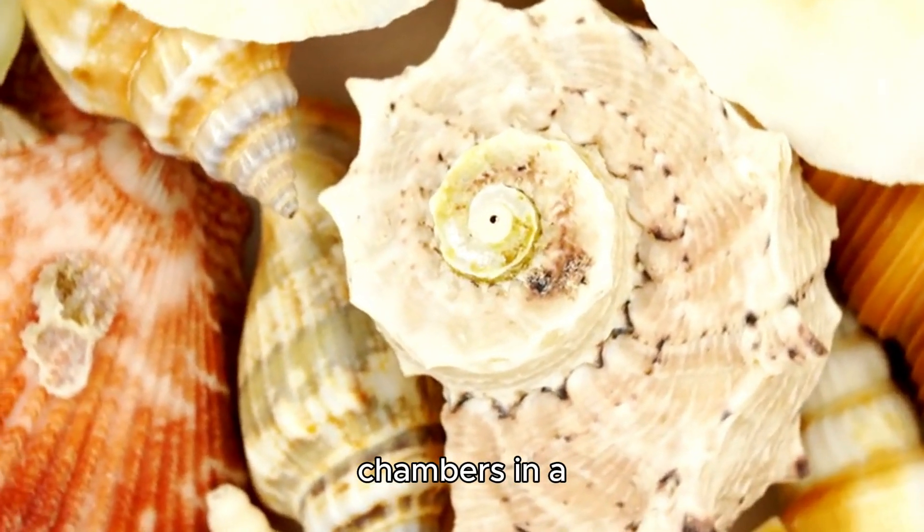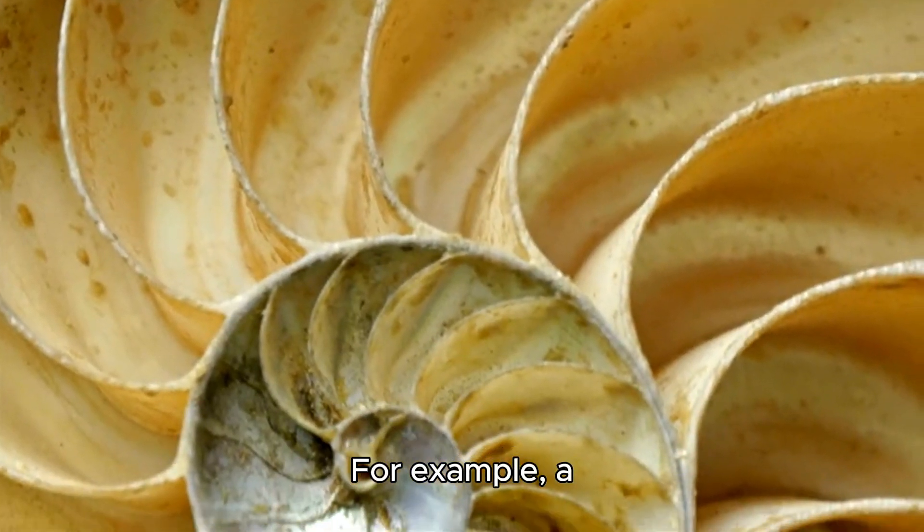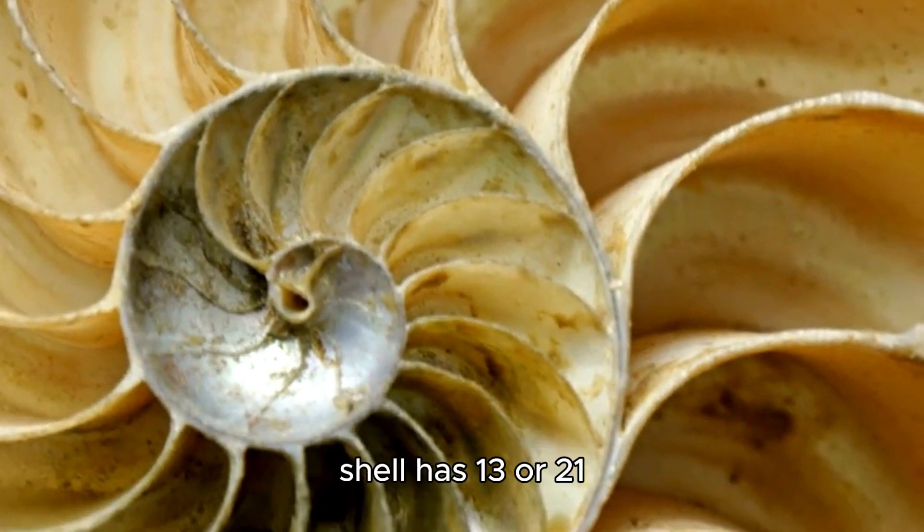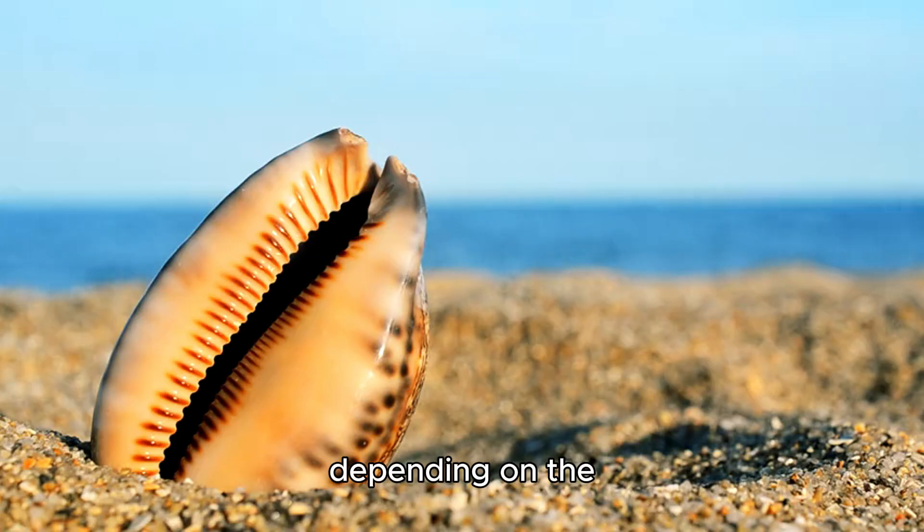The number of chambers in a nautilus shell is usually a Fibonacci number. For example, a typical nautilus shell has 13 or 21 chambers, depending on the age and species.